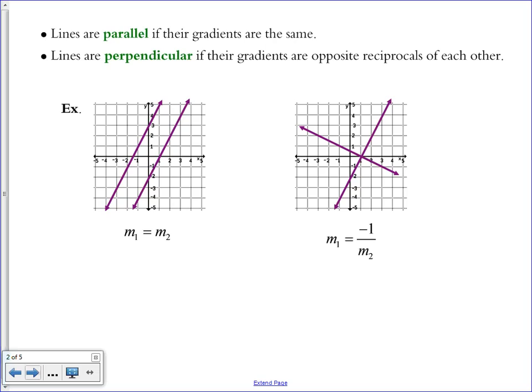There are two visuals on this slide. The first shows two parallel lines, and underneath it says M1 equals M2. M is the letter we use to represent the slope or the gradient. So for any two parallel lines, the slope of the first is equal to the slope of the second. We can show that by counting the slope.